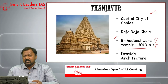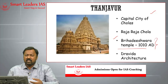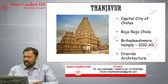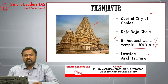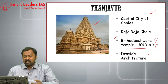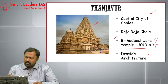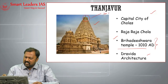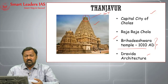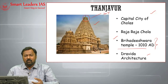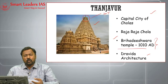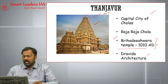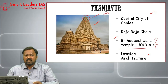The Brihadeeswarar Temple in Tanjavur was built in 1010 AD by Raja Raja Chola. It has been recognized as a UNESCO World Heritage Site and is a clear representation of the Dravida style of architecture, featuring a prominent Vimana. The top stone on the temple is approximately 70 tons, and historians and scientists are amazed at how this monolithic granitic stone was lifted to such a great height.